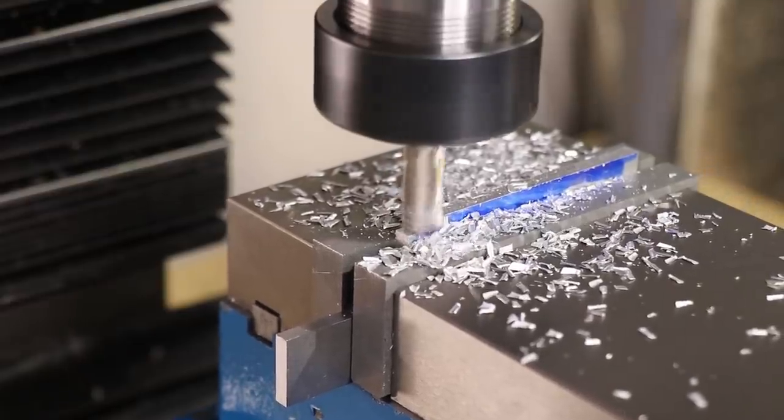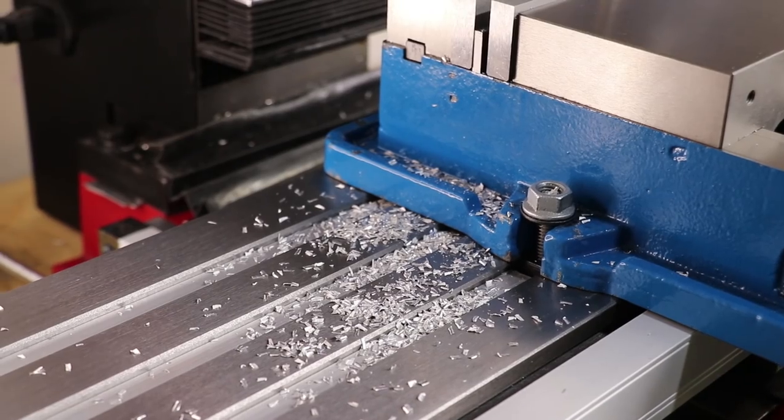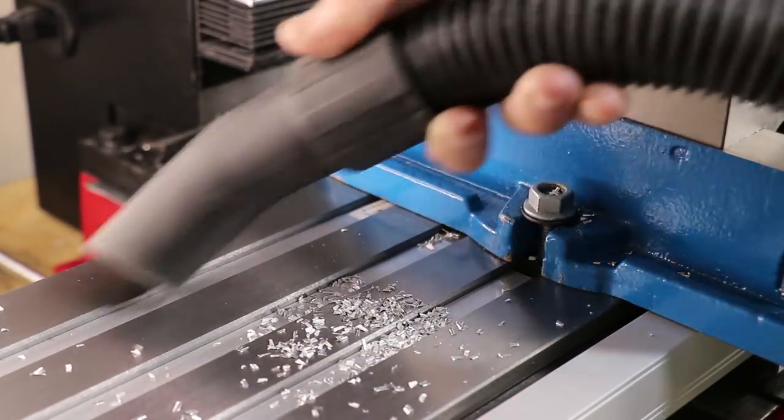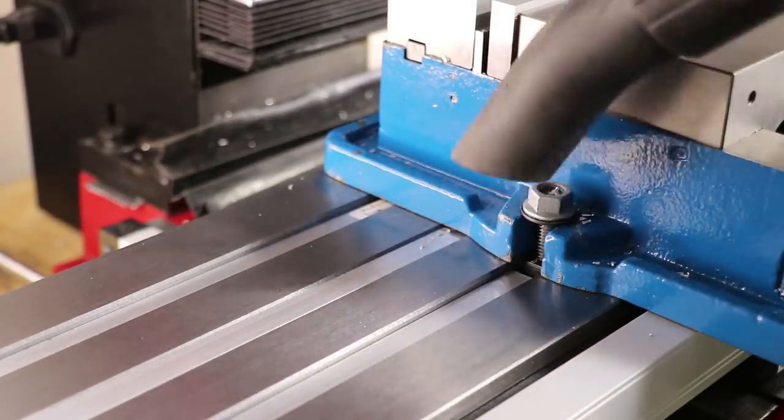The aluminum channel will prevent chips from falling into the T-slots and it will allow for easy vacuuming. However the seal isn't so tight that it prevents coolant from flowing into it. Overall it's a huge improvement and to be honest I really do like the look.